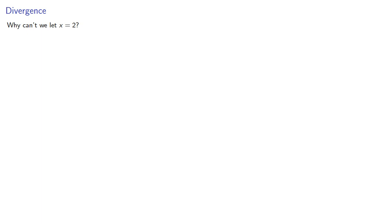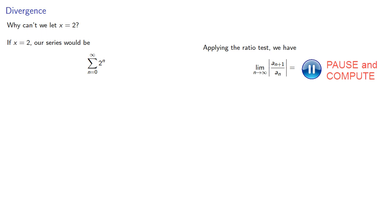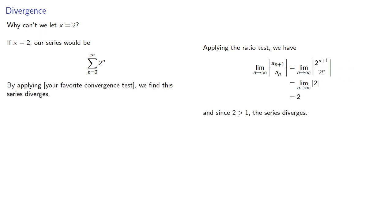So why can't we let x equals 2? If x equals 2, our series would be, by applying your favorite convergence test, well, how about the ratio test, we find the series diverges. And this leads to a key principle: Avoid divergent series. And the natural question to ask at this point is, for what values of x will the series converge?